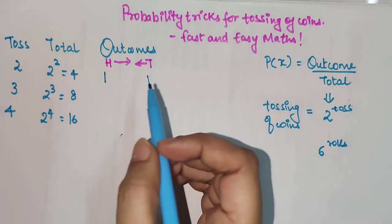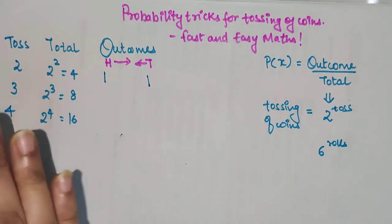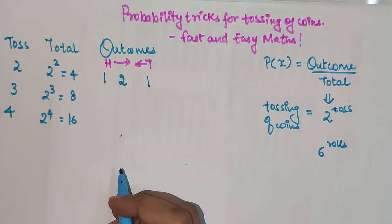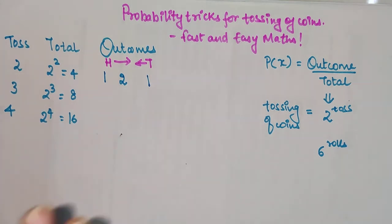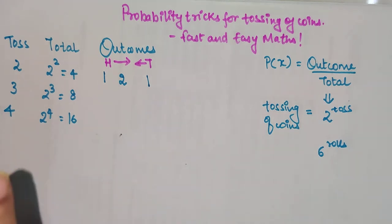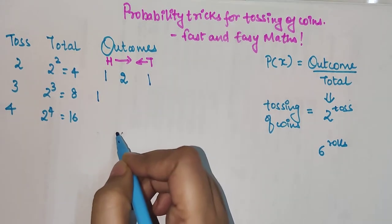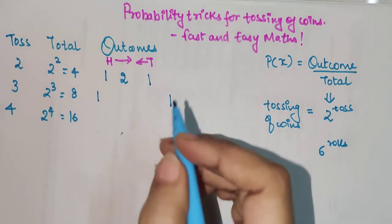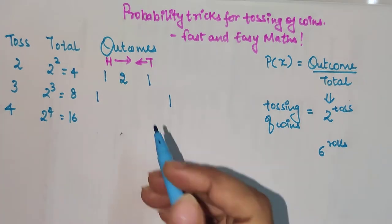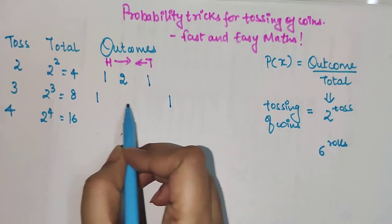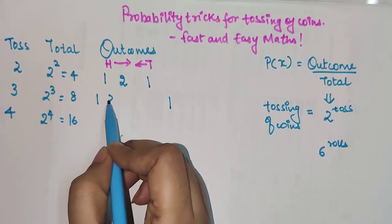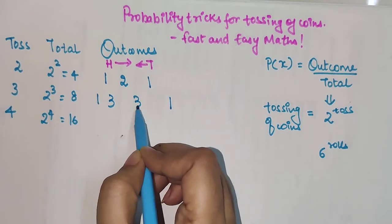The possibility of having one head or one tail is 1 plus 1, which is 2. Similarly, when a coin is tossed three times, the outcome for all three heads is 1 and all three tails is also 1. The in-between outcomes are 1 plus 2 which gives 3, and 2 plus 1 which gives 3.